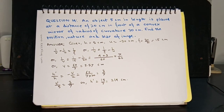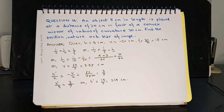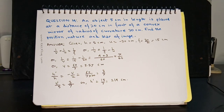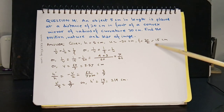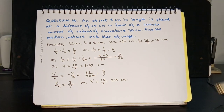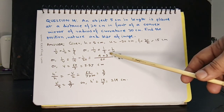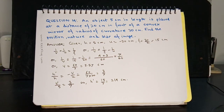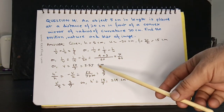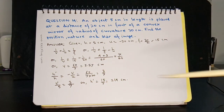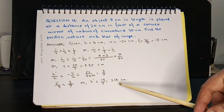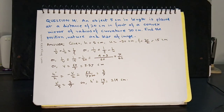Question 14: An object 5 cm in length is placed 20 cm in front of a convex mirror of radius of curvature 30 cm. Find the position, nature, and size of the image. Here h = 5 cm, u = −20 cm, and f = +15 cm (half the radius of curvature, positive for convex mirror). Using the mirror formula, v = 8.57 cm. Using the magnification formula, the image height is 2.14 cm — less than half the size of the object.